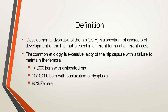Coming to the epidemiology of the condition, the common etiology is laxity of the hip capsule, although the exact cause is still unsure — this is just a hypothesis. A lax hip capsule leads to failure of maintenance of the femoral head in the acetabulum. This condition is more common in females: 80% of affected patients are female. Incidence is 1 in 1,000 live births, and 10 in 10,000 births present with subluxated or dysplastic hips.